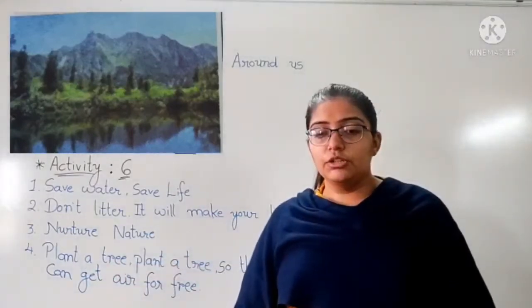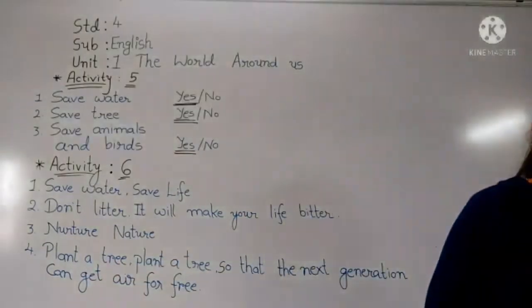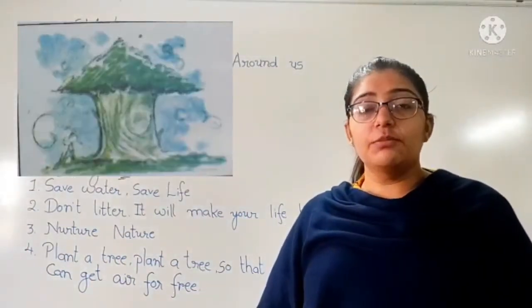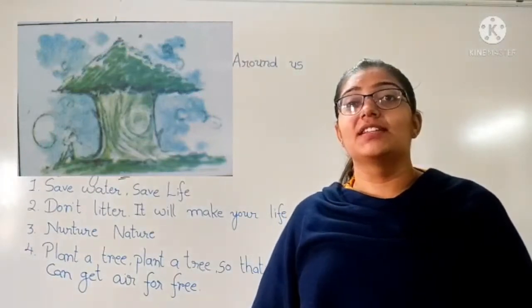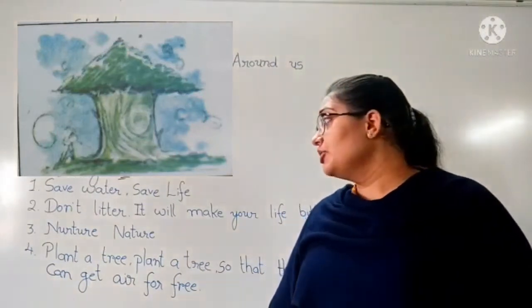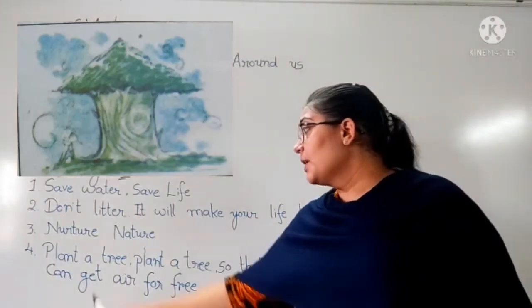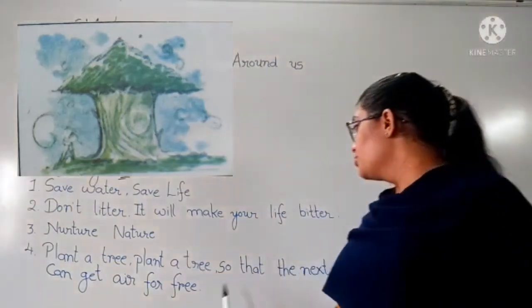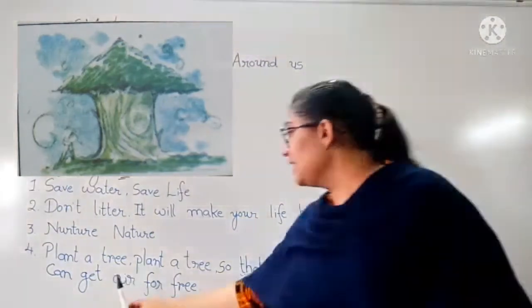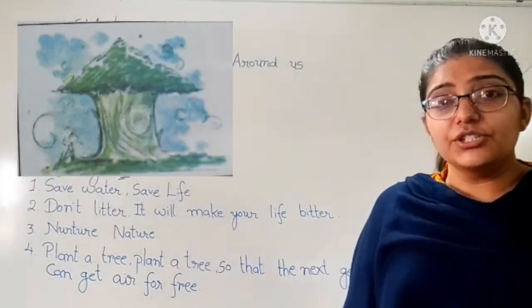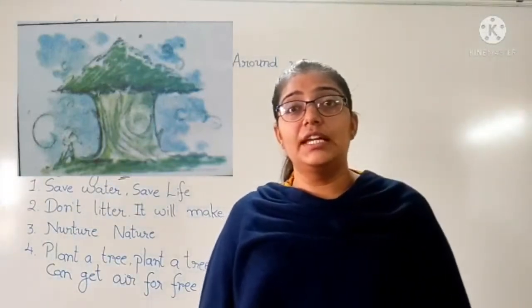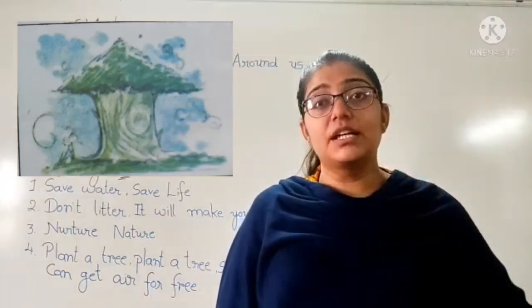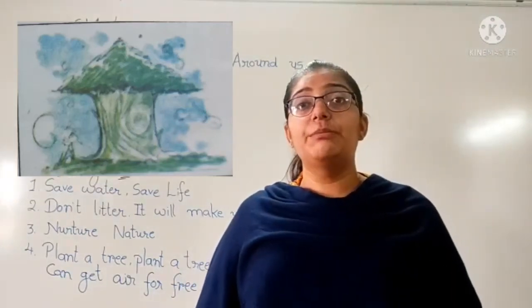In the fourth picture, you can see it on your screen. Which sentence is suitable for it? The last sentence is the answer: plant a tree, so that the next generation can get air for free. Plant a tree so that the next generation can get free oxygen.